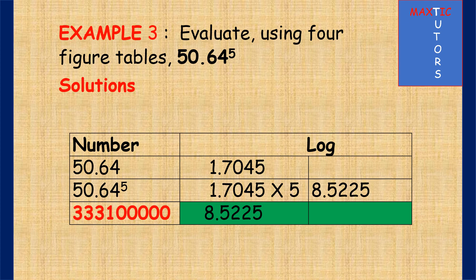Example 3: evaluate 50.64 raised to power 5. From the rule, anything involving a power means you multiply the log by the power. 50.64 has 2 digits: characteristic is 2−1=1. From the four-figure table, find the log. Then multiply by 5. By the time you add 1, the characteristic becomes 9. Find the antilog: 52 under 2, difference 5, gives 3331. But because you have 9, you must make it up to 9 digits, so you add 5 zeros to the 4-digit result 3331, making it 9 digits total.